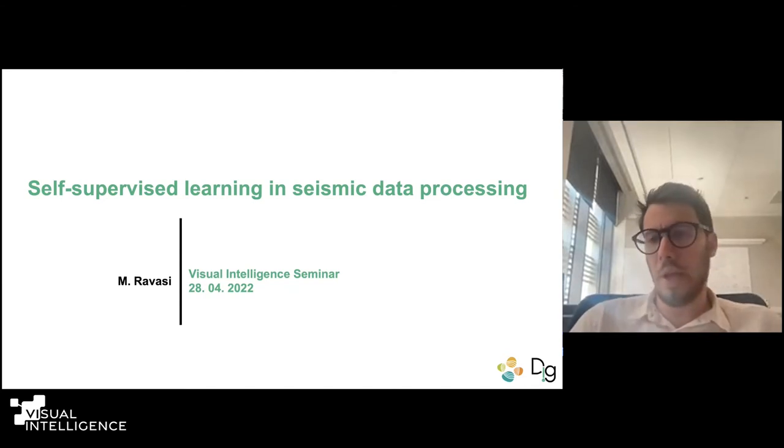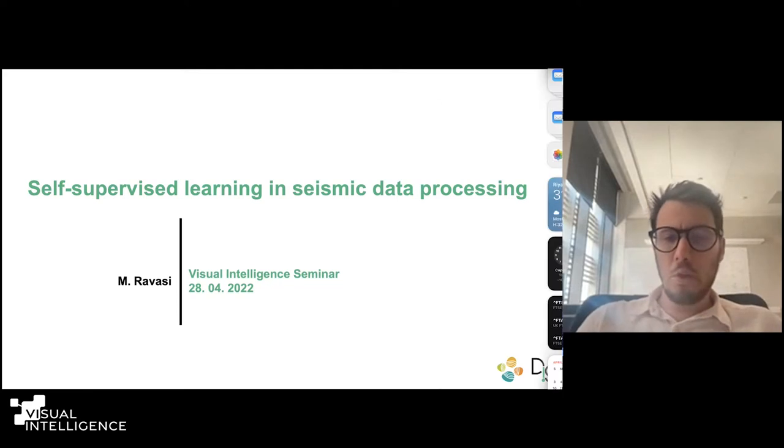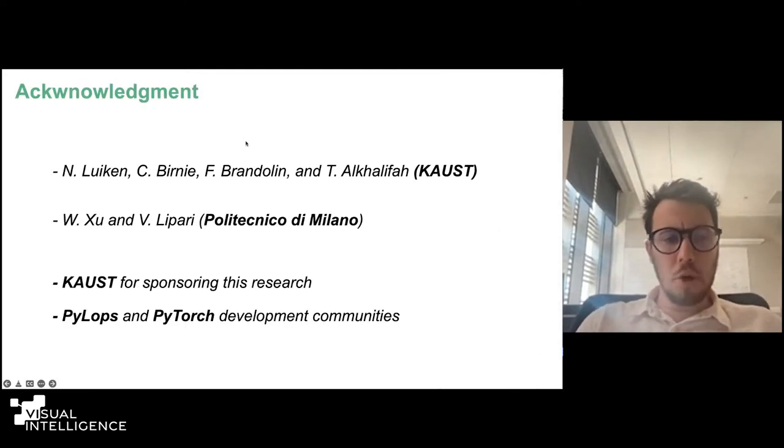However, some of the learnings and findings that we have started to come up with may very likely have broader implications in any domain where you're trying, or in any imaging discipline where you're trying to infer some parameters from observations, and they are related somehow via some well-known physical process. But nevertheless, as we will see, you can take advantage of neural networks alongside the way that brings you from the data to the model. So before I begin, let me say that this is not just the work of myself. It's actually a work of some of my students and postdocs in KAUST, as well as I will briefly show some collaboration work that we did with my original group, where I actually studied my bachelor and master's degree back in Italy. And I would also like to thank the Pylops and the PyTorch development communities, which are the two main Python frameworks where I can use and build on top to develop the methods you will see today.